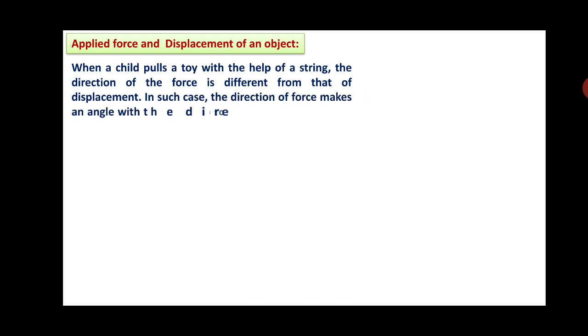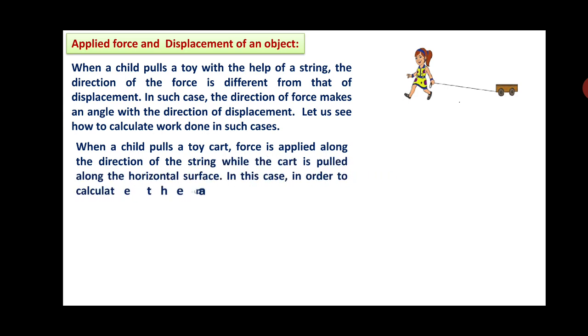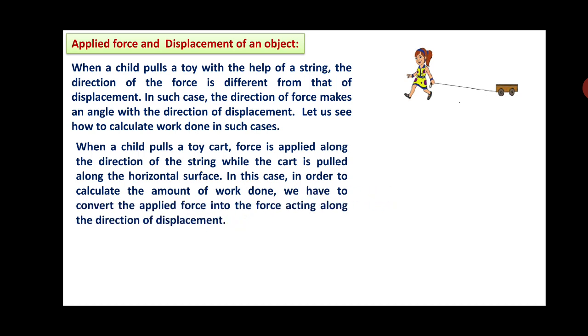We will now see applied force and displacement of an object. When a child pulls a toy with the help of a string, the direction of the force is different from that of the displacement. In such case, the direction of force makes an angle with the direction of displacement. Let us see how to calculate the work done in such cases. Please observe this figure. When a child pulls a toy cart, force is applied along the direction of the string while the cart is pulled along the horizontal surface. In this case, in order to calculate the amount of work done, we have to convert the applied force into the force acting along the direction of the displacement, means along the horizontal line.